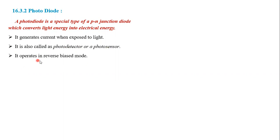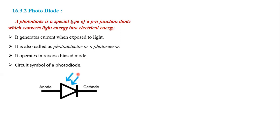It operates in reverse bias mode. The circuit symbol of the photodiode is similar to the p-n junction diode. The only difference is that light is falling on it.